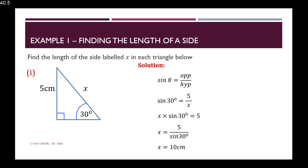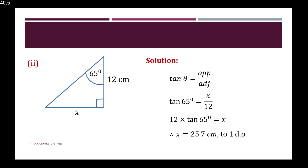Ensure your calculator is in degrees mode for all calculations. Example 2: Find the side labeled x. The angle is 65 degrees. The 12 cm is the side touching that angle, so it's the adjacent side. And x is opposite the angle. We need a formula with opposite and adjacent — that's tan theta equals opposite over adjacent. Substituting our values: tan 65 equals x over 12, so x equals 12 multiplied by tan 65, which gives 25.7 centimeters to one decimal place.